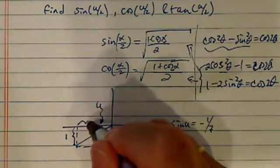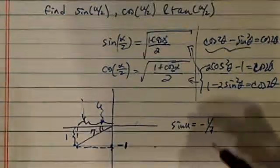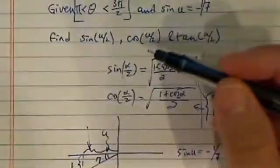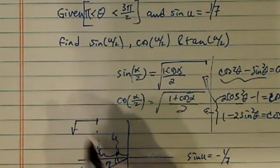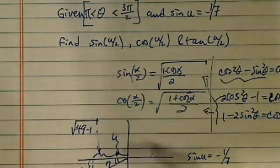The adjacent leg, which we need, is found using the Pythagorean theorem. The hypotenuse squared is 49 minus 1, which is 48.